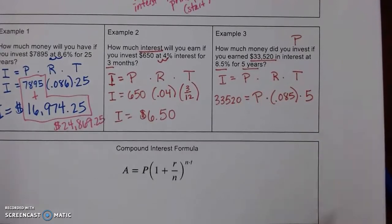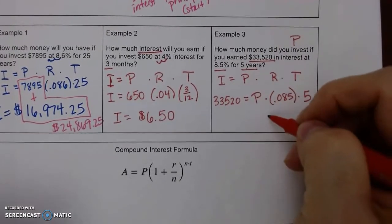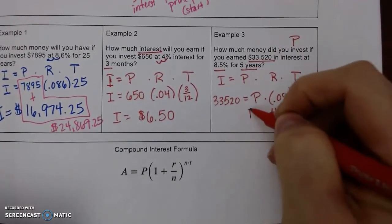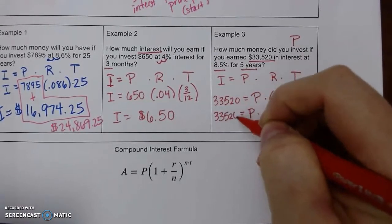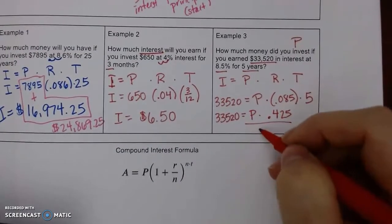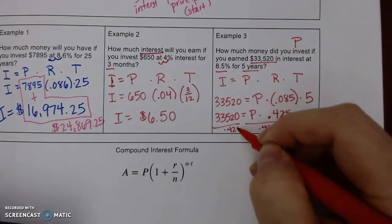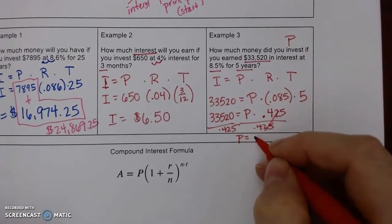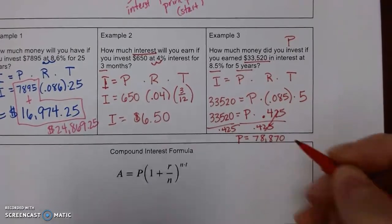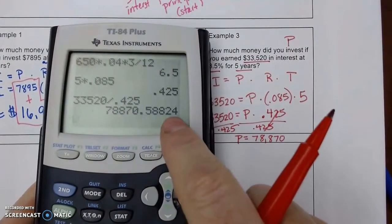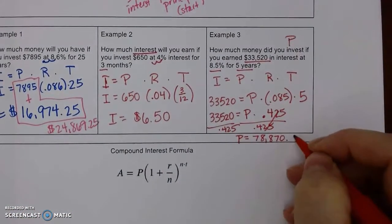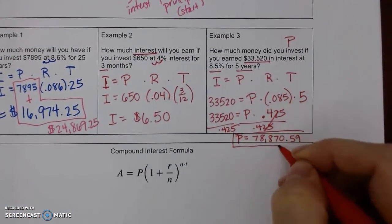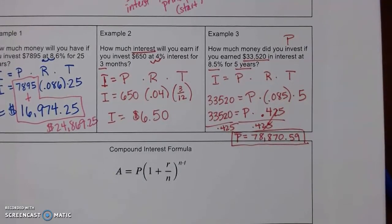So, I'm going to go ahead and multiply those out. So 5 times 0.085 is 0.425. And to get P by itself, we're going to divide by our decimal. So type that in. And we started with $78,870. And notice, I do have a bunch of decimal places, so we're going to round since it's money. And that's the principal that we started with.